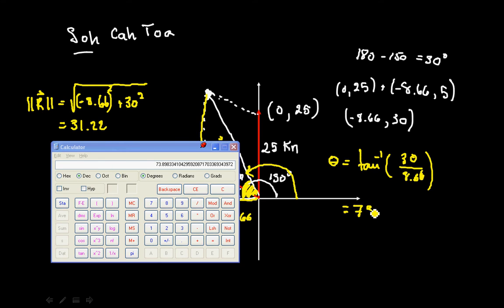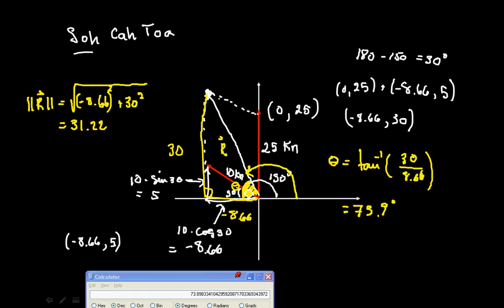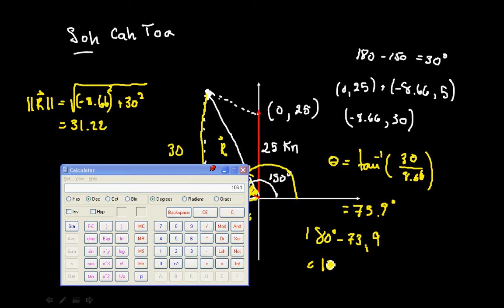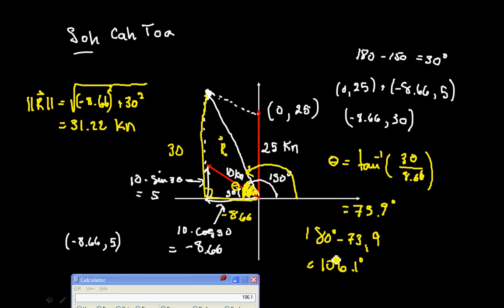But remember, that's the angle over here on the inside, and I want on the outside, so I do 180 degrees minus 73.9, and that gives me 180 minus 73.9, that gives me 106.1 degrees. So here we have it. The resultant vector has a magnitude of 31.22 knots, and an orientation of 106.1 degrees.